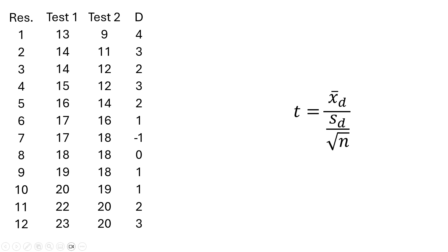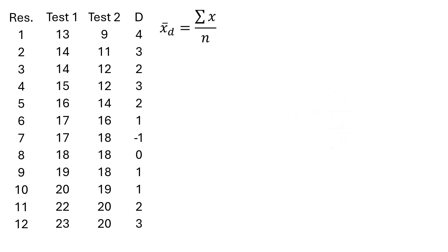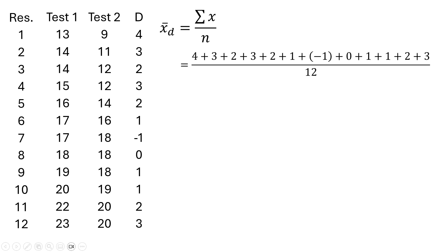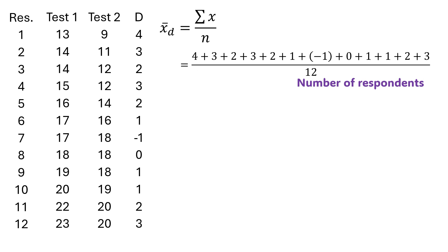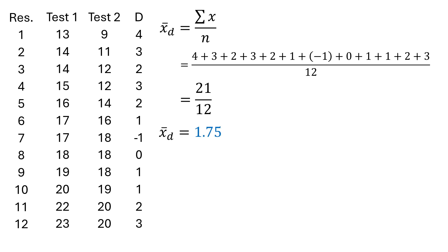To find the mean of ungrouped data, we use the formula: sum of the data divided by how many numbers there are. So we add 4 plus 3 plus 2 and so on — all the differences — and divide by 12. If we add all the values including the negative one, we get 21, and dividing by 12 gives us a mean of 1.75. That is the average of the differences.